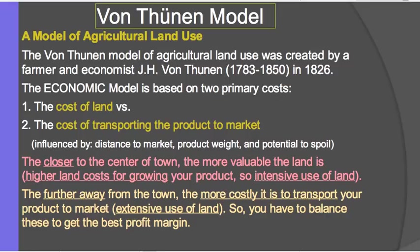The further away you are from the town, the more costly it is to transport your product to the town. So usually in areas further away from the town, you have an extensive use of the land. The land isn't so expensive, so it allows you to use the land extensively, not putting a lot of pressure on it. So you have to basically balance these two costs to get your best profit margin.